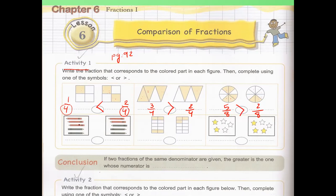Here we have red pencils and blue pencils. Let's check: write the fraction that represents the number of red pencils. How many red do we have? Three over the total five. Here, how many red do we have? We have two over five. In which figure do we have more red pencils? In the first one. So three over five is bigger than two over five.